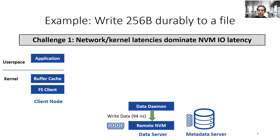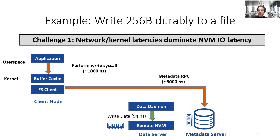The first challenge with this model is that network and kernel overheads dominate the IO latency of NVM. To see this more clearly, let's look at an example. An application wants to write 256 bytes durably to a file — as a reminder, it takes 94 nanoseconds to write this amount to NVM. The application first crosses into the kernel, which updates locally cached blocks, incurring roughly one microsecond overhead. Next, the kernel-level file system client accesses the metadata and data servers to update the file, which for consistency has to occur in sequence, causing two times the eight microsecond latency. Finally, the data is written to NVM. As we can see, with the low IO latency of NVM, the kernel and network overheads dominate the end-to-end write latency.